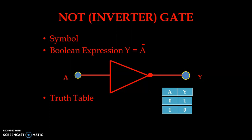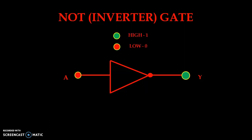Now let us simulate our NOT gate. For the first condition we have applied a low signal at the input side and we have a high signal at the output — so it is inverted. For the next condition — high input — you can observe that when we apply a high signal we are getting low at the output. So whatever signal we give at the input side, it is inverted at the output side.